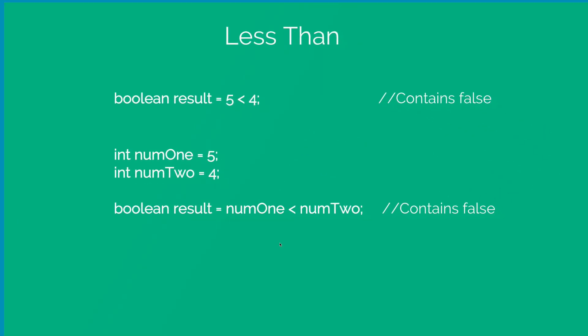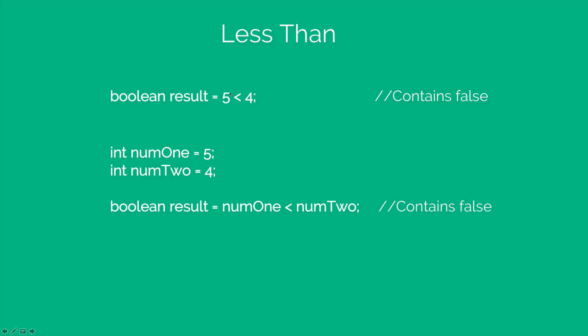Similarly, we have less than. We know that 5 less than 4 is going to give us a false and that's what happens inside the result variable.